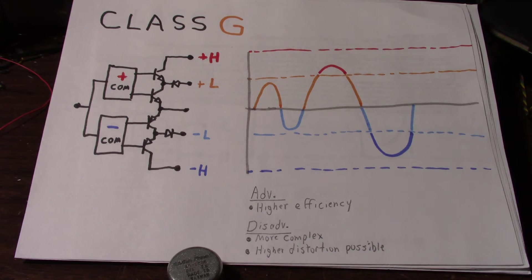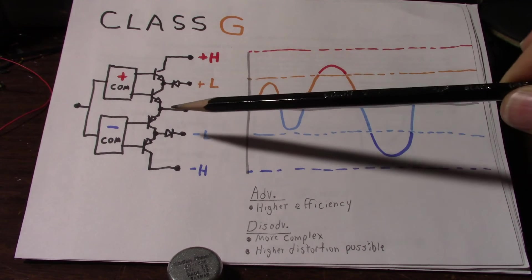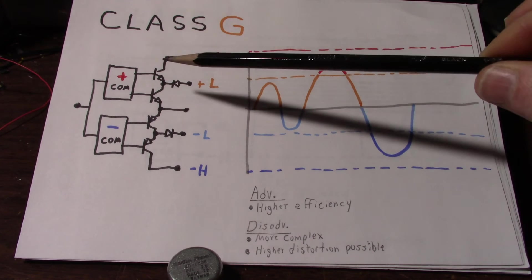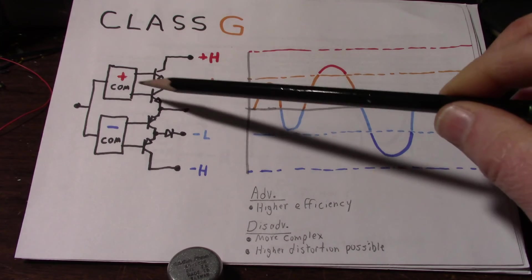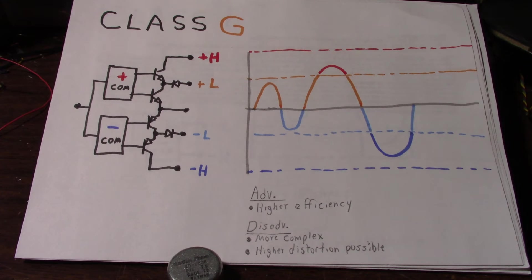And these types of amplifiers will have more distortion than a good Class AB amplifier because there's issues with the commutation. You're switching in an additional transistor and something called the early effect, you're changing the voltage seen by these low rail output transistors. So these were more commonly used in PA type amplifiers before Class D took over.